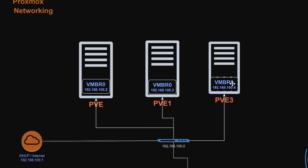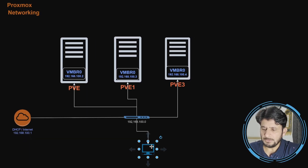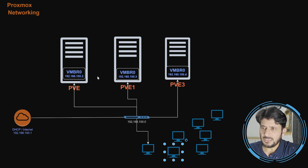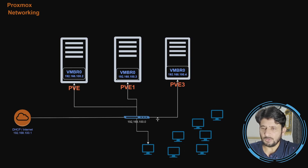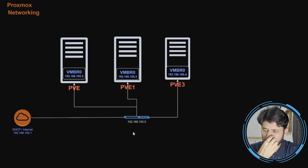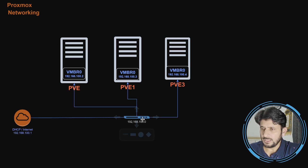For the cluster, I need dedicated networking between these three nodes so that communication between them takes place without any interruption. Right now, if there are multiple machines, there will be a lot of traffic congestion and communication between them will not be efficient. If I'm also creating Ceph storage between these servers where synchronization takes place between three servers, there will definitely be interruption on the network. To avoid that, I have created another network that is isolated from the existing network. All these machines are on the network 192.168.100.0 where DHCP is providing IP addresses.